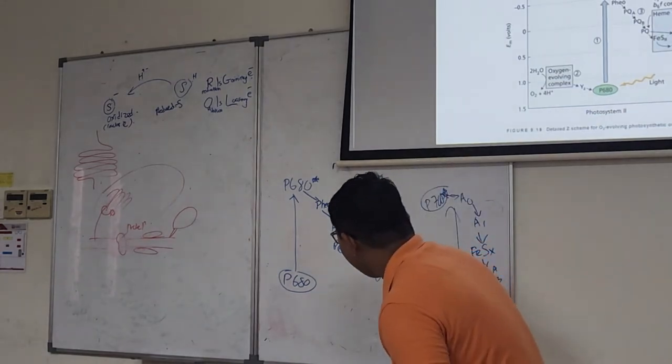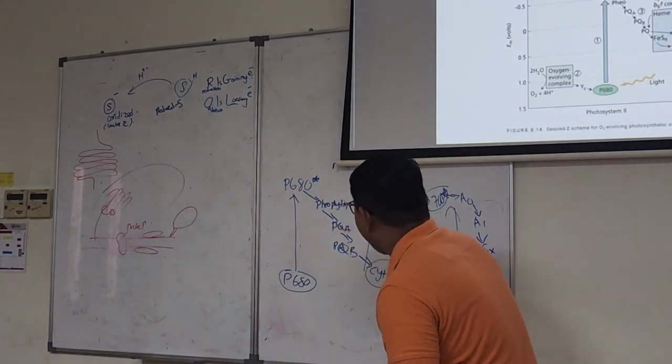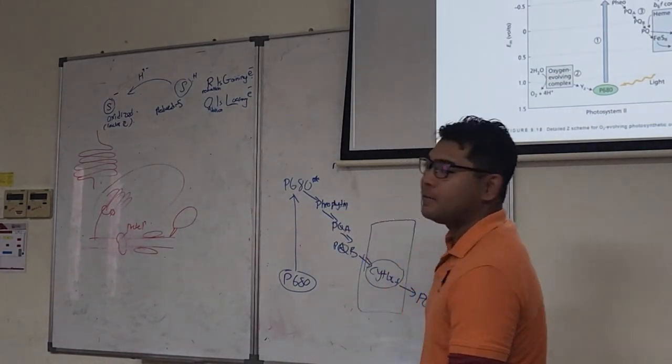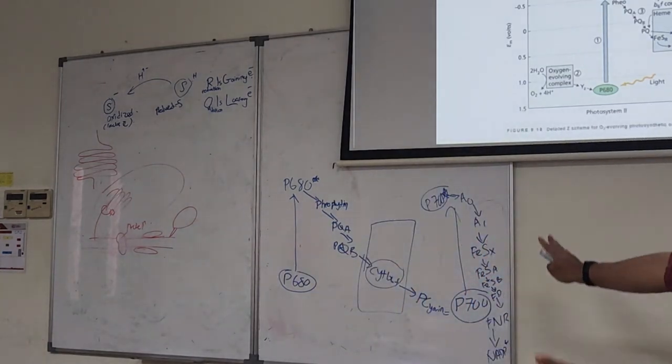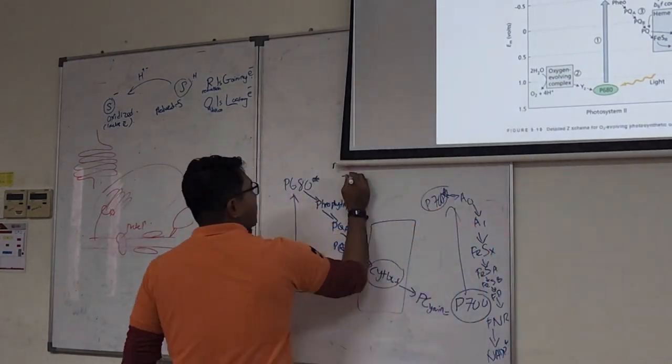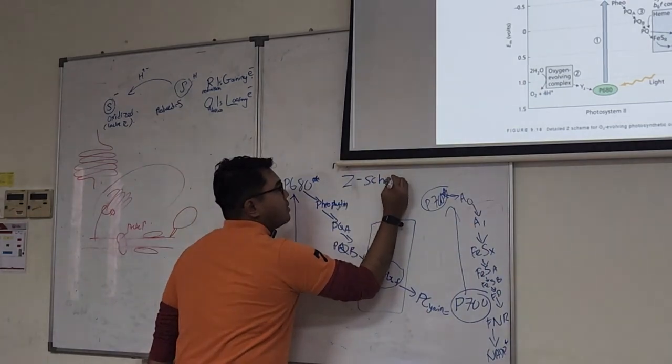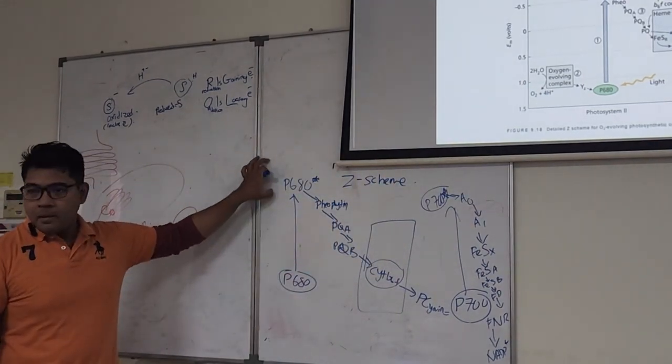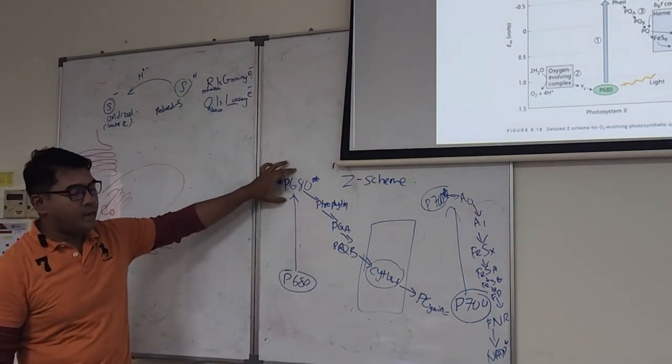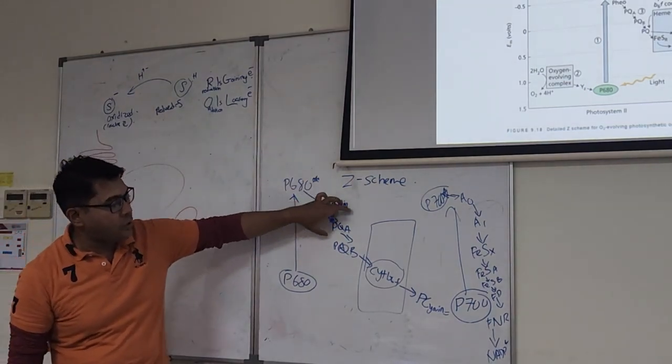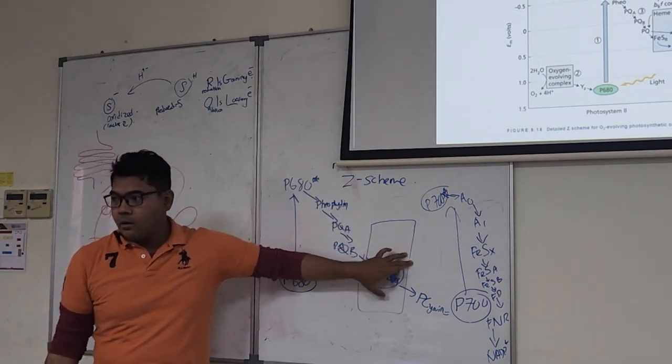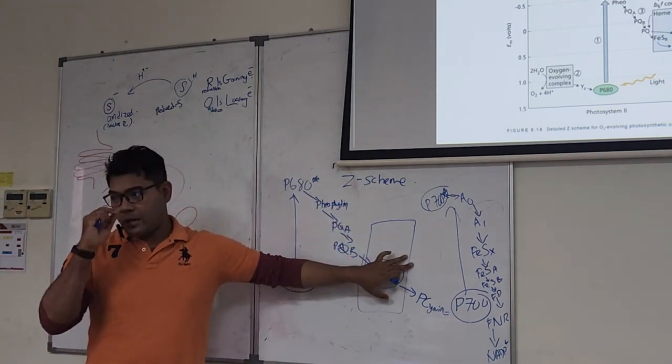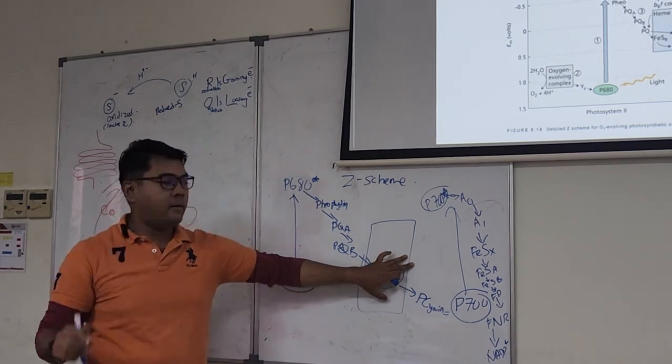Oh, by the way, here at cytochrome B6F, it has its own structure, which we'll see later. But in essence, this is the Z-scheme. Energy goes up. Then it hits the excitation. Then it goes down. Electron transport going downhill. Hence the word Hill's reaction, named by Robert Hill.